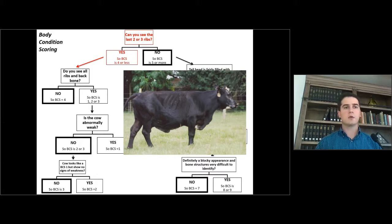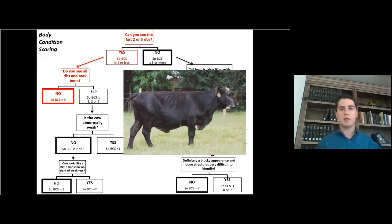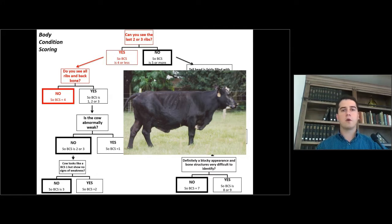Now let's move to the second question: do you see all the ribs and backbone? You are able to see the backbone, but you do not see all the ribs. So according to this flowchart, you would call this cow a body condition score 4. But if you remember the characteristics from the presentation, a cow at body condition score 4 — you don't see more than 2 to 3 ribs.